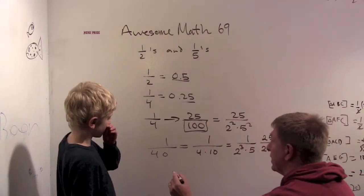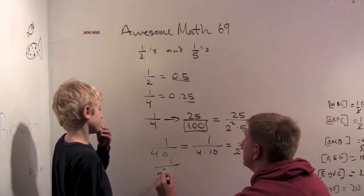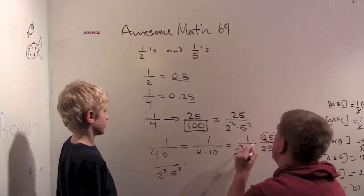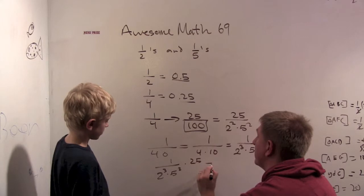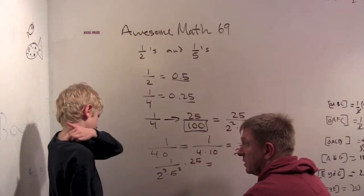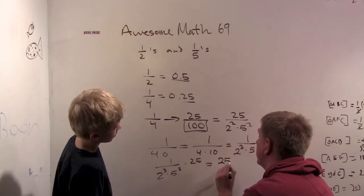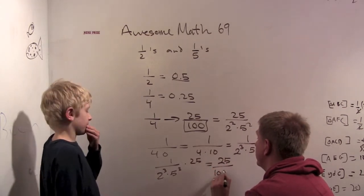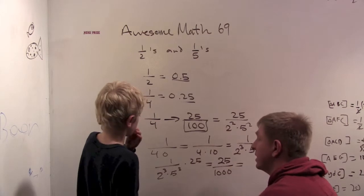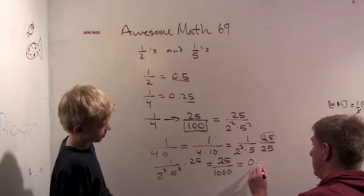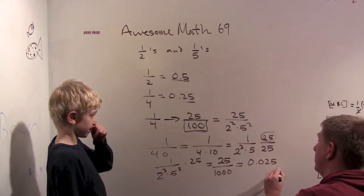So now I get one over two cubed times five cubed, and then with a twenty-five on the top. What is two cubed times five cubed? It's one thousand. So one-fortieth is the same as twenty-five over one thousand. And what's that going to be as a decimal? It's zero point zero two five.